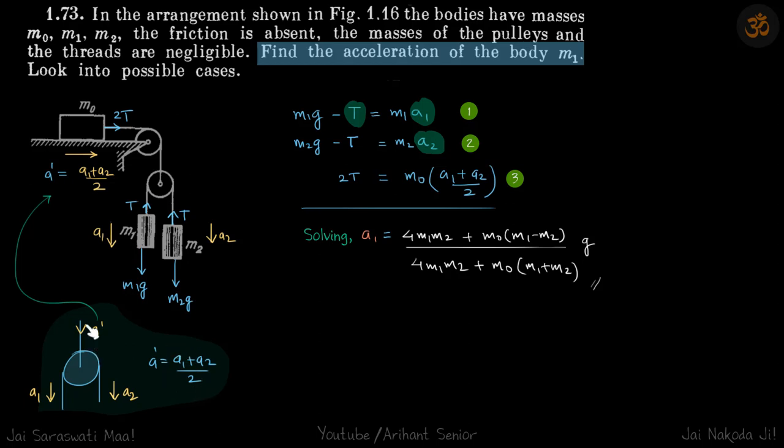This is a standard relation for this kind of pulley where you have two threads passing through and the pulley itself is moving. The acceleration of the pulley is (a1 + a2)/2, and here a' is the acceleration of the pulley, so that is the acceleration of m0.